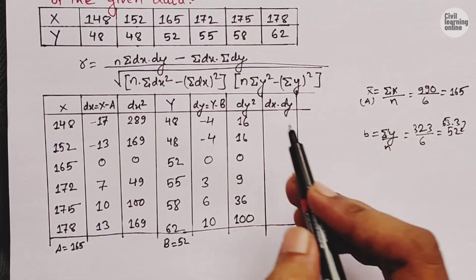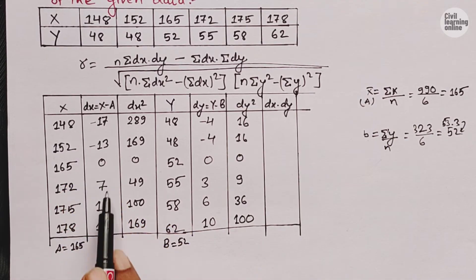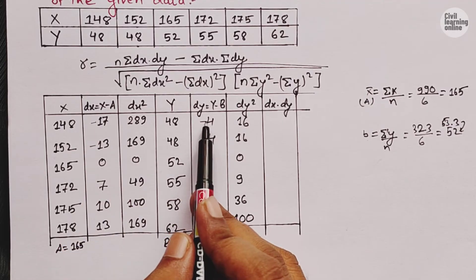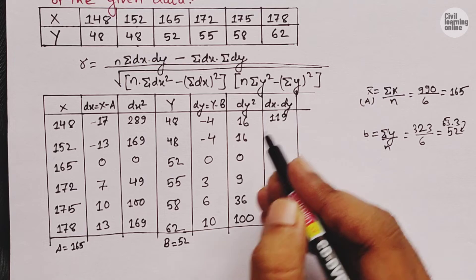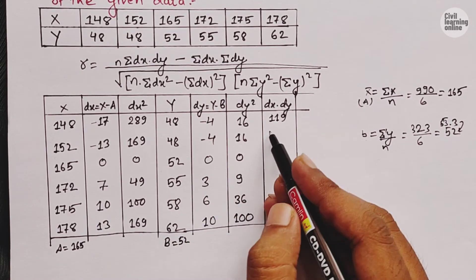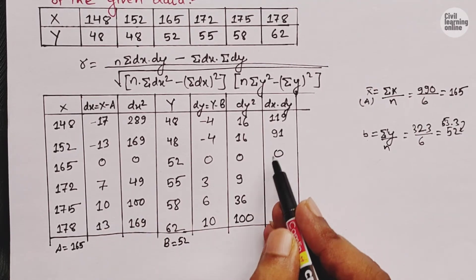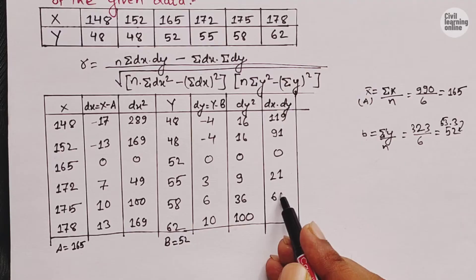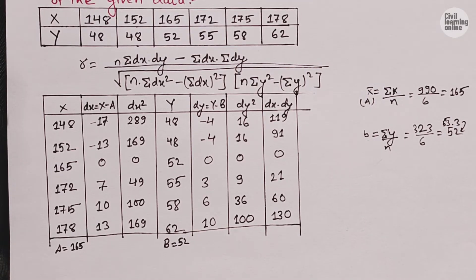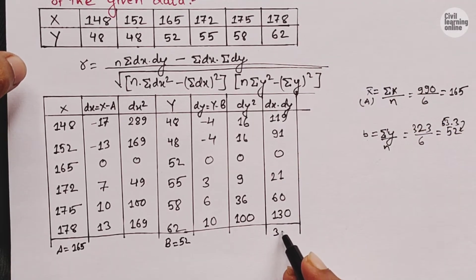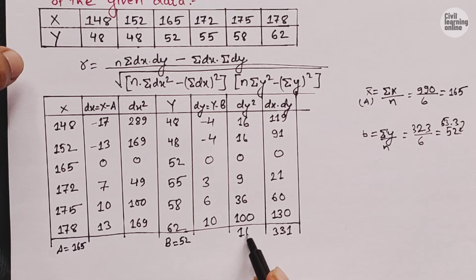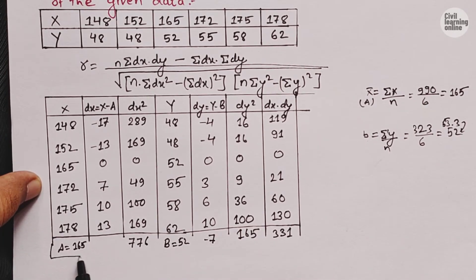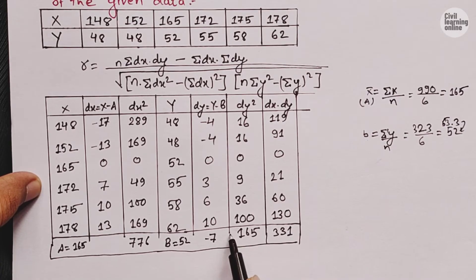We have one more column: dx times dy. Multiplying the dx and dy columns: minus 17 times minus 4 is positive 68; minus 13 times minus 4 is 52; 0 times 0 is 0; 7 times 3 is 21; 10 times 6 is 60; and 13 times 10 is 130. Now adding all column values: summation dx·dy is 331, summation dx squared is 776, summation dy squared is 165, summation dx is 0, and summation dy is minus 7.